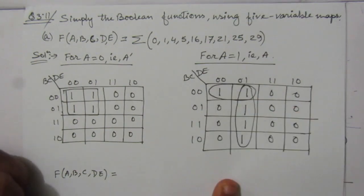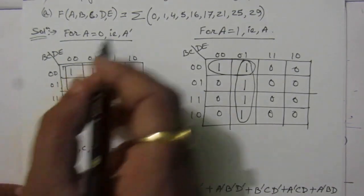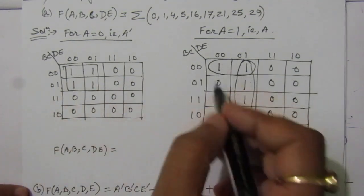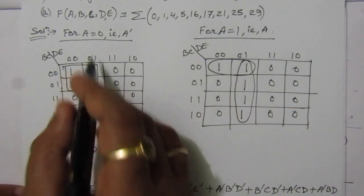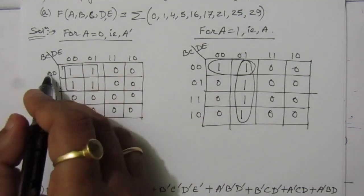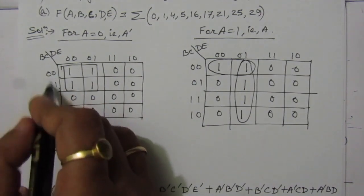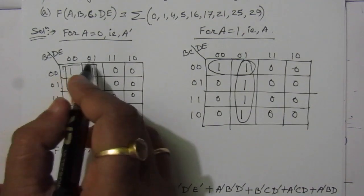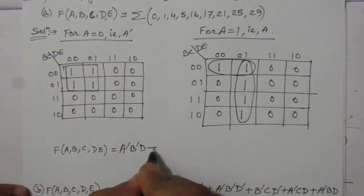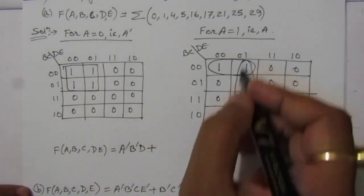Now we have to write the expression. For this K-map we have A-bar. Here we can combine like this, and for the group we cannot combine further, so we write: A-bar, then for 0, 0 — that means B-bar from this side and D-bar from this side — so A-bar B-bar D-bar. This one is complete.